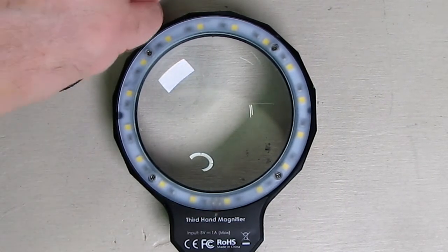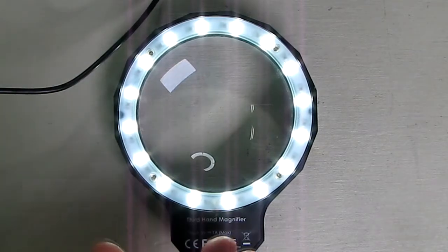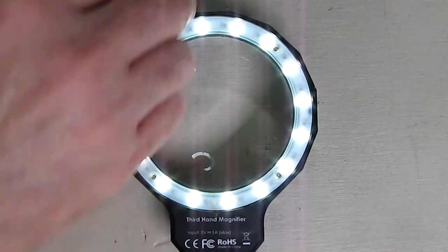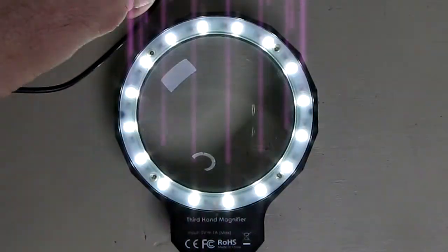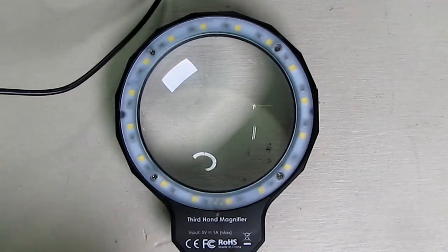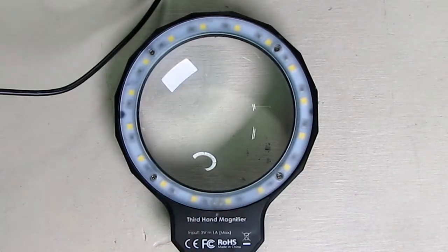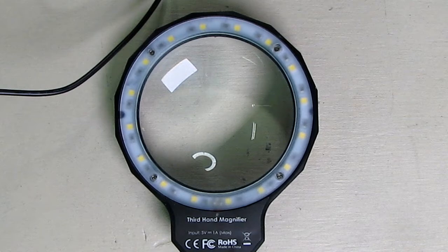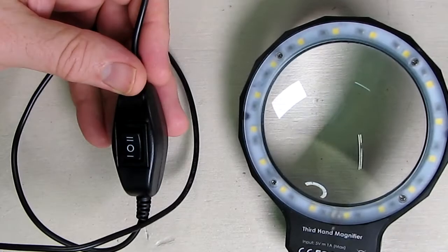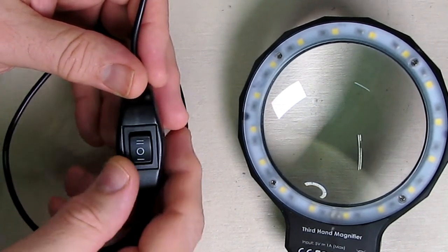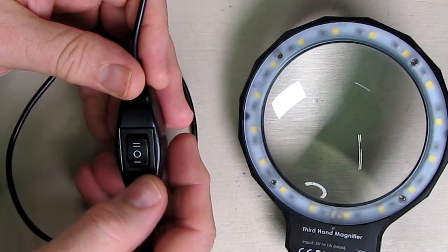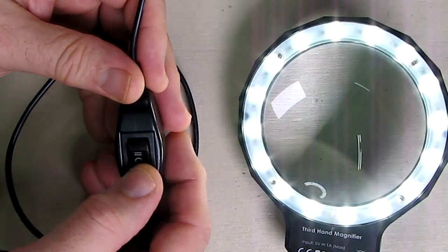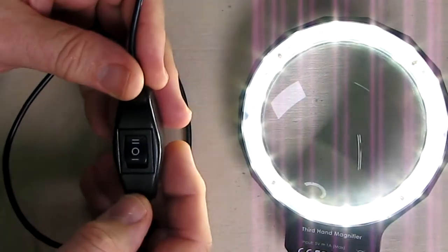So I have this hooked up to the USB. I can turn it on and you can see that that's the low and that's the high. Very simple to use and very nice, symmetrical, and very bright and usable. The control is very simple. It has off in the center, low, and then high.